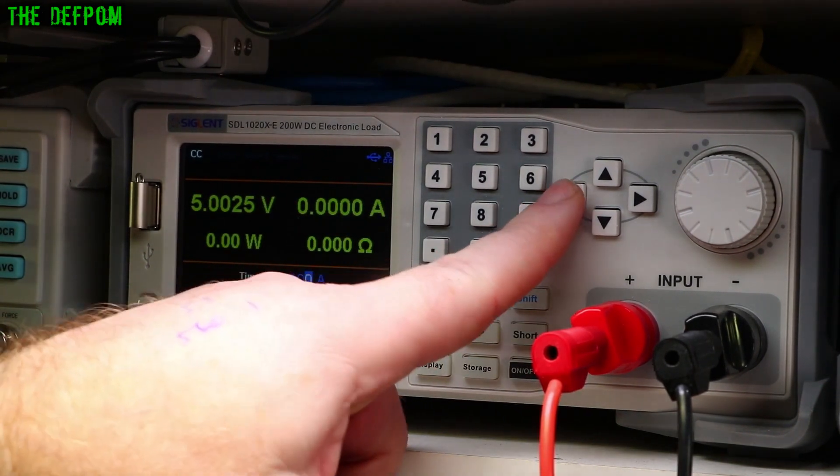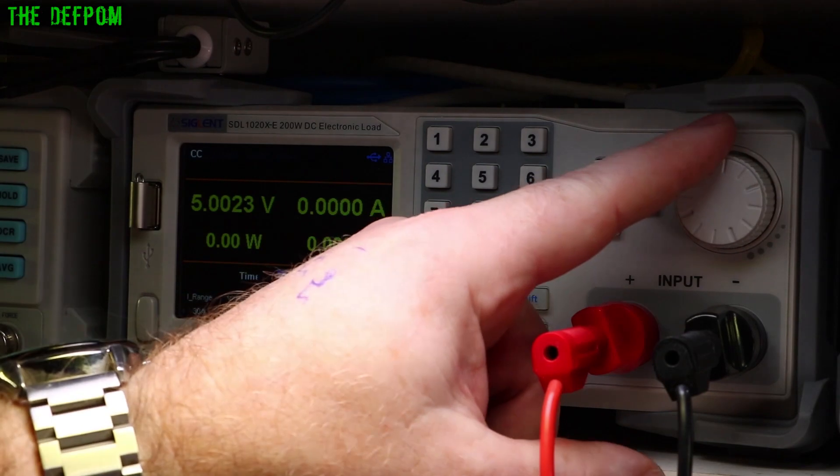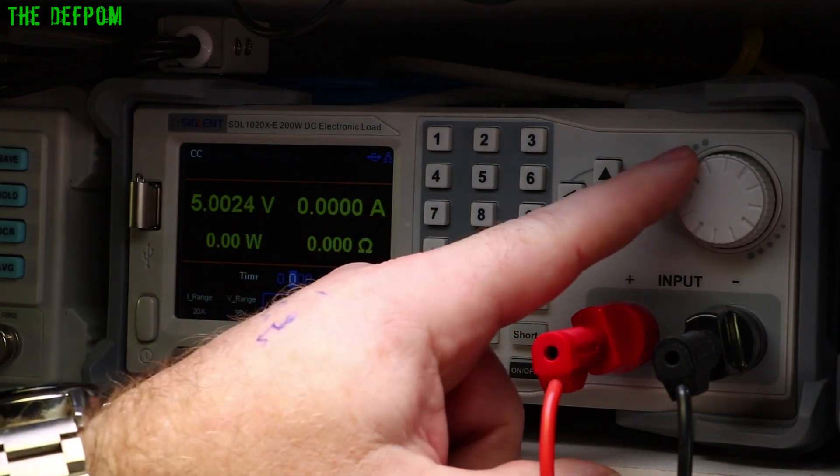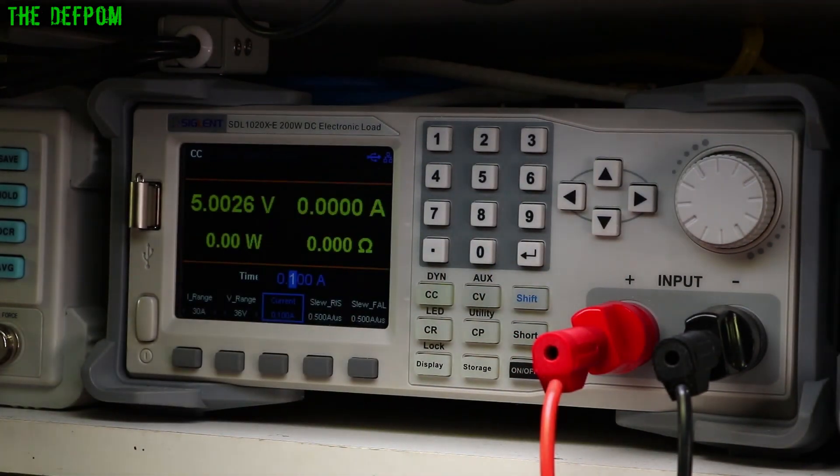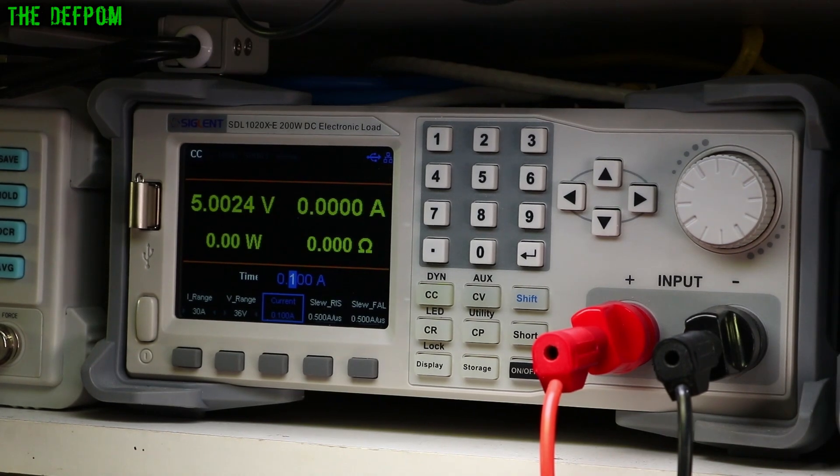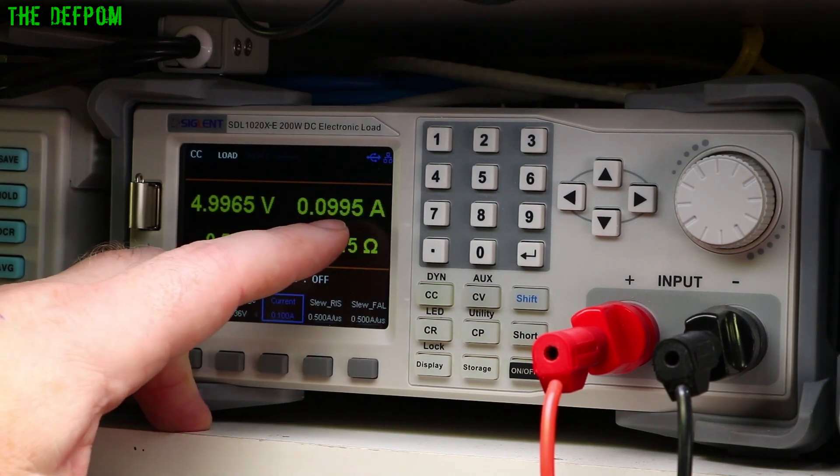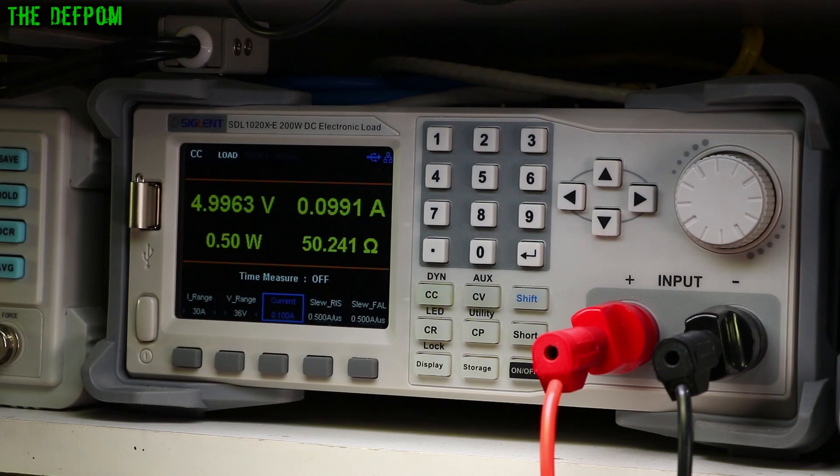Currently on this, it's currently set at 2 amps. So what we're going to do is turn this down. I'm going to go to just 100 milliamps. Now, this will prove that 500 milliamps is not greater than 100 milliamps. So load on, and there we go. We're drawing 99.5 milliamps. Power supply is still good. No issues.